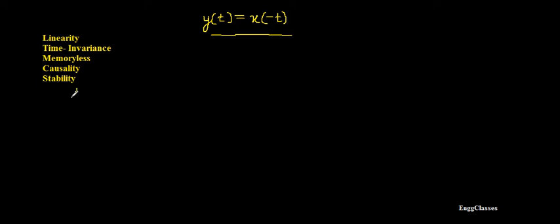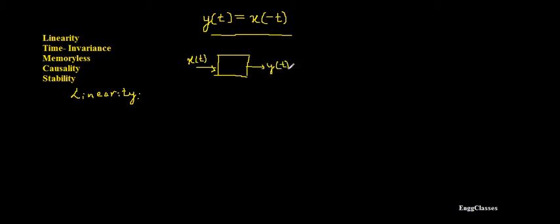To start with, let us try to understand what the system is. I will draw a block diagram — a simple block fed with input x of t, producing output y of t, with system operator h of t. So what is y of t? It is x of minus t. What the system does here is it provides the reflection. Wherever it finds t, it replaces that with minus t. That is the nature of the system.